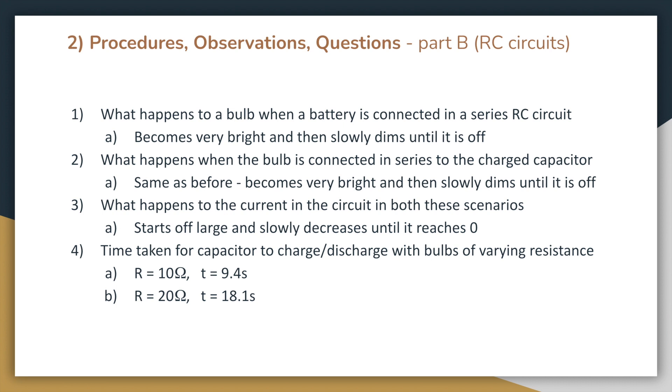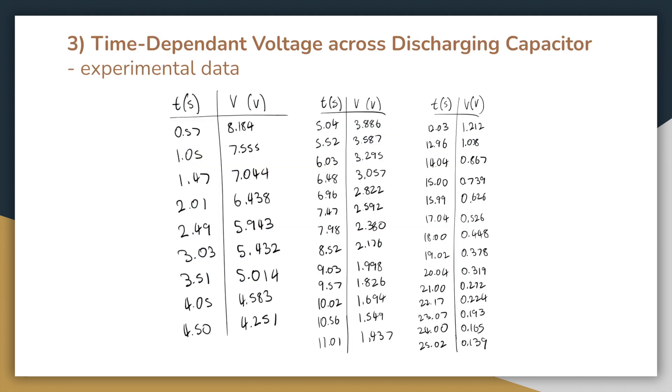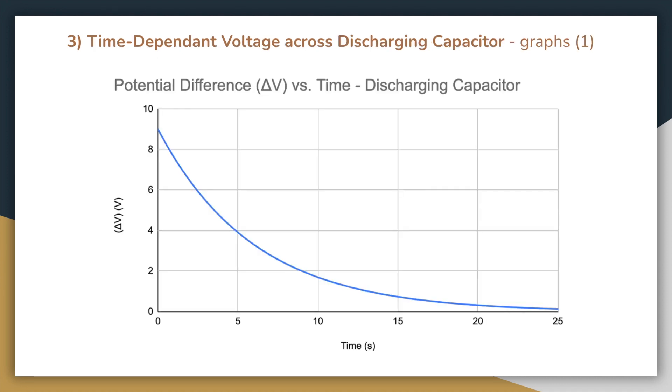The time taken to charge and discharge capacitors which were connected in series to resistors of varying resistance are also shown at the bottom of this slide. So now moving on to the main experiment, the time dependence of potential difference across a discharging capacitor. My experimental data is shown here in the form of a table, and now here in the form of a graph.